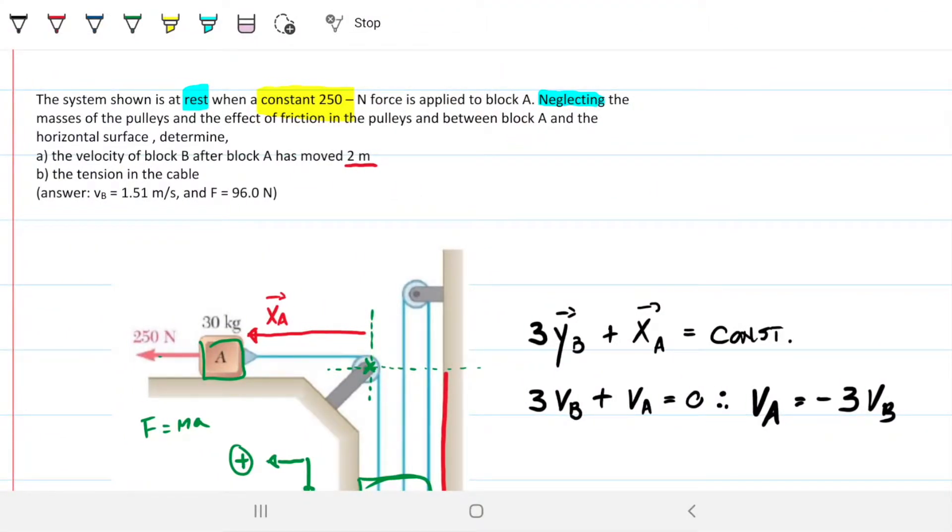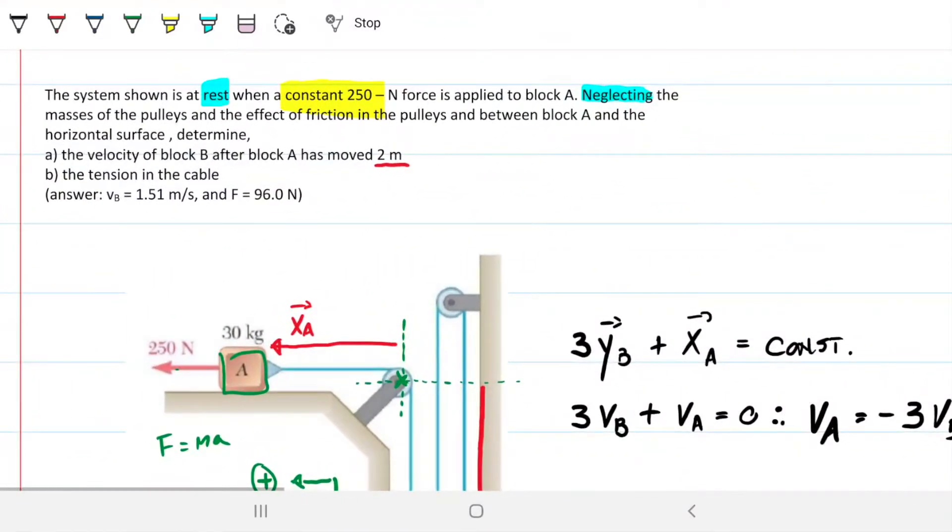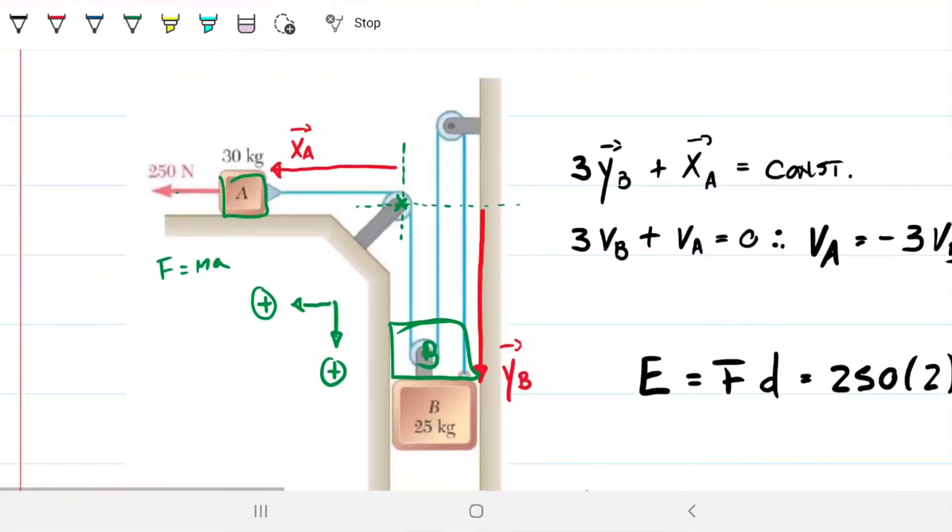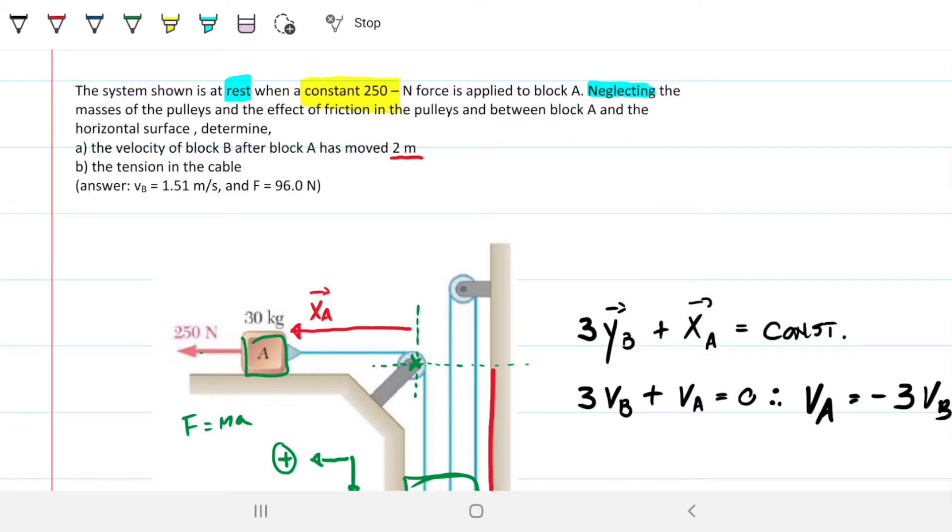So in this case here, it's exactly the same thing. I'm actually using the same page to show you. We're going to solve the same problem. The problem is the pulley system that we have already solved for different situations. Problem statement reads, the system shown is at rest when a constant 250 Newton force is applied to block A. Neglecting the masses of the pulleys and the effect of friction in the pulleys and between block A and the horizontal surface, determine the velocity of block B after block A has moved two meters and the tension in the cable. So obviously, answers have to be exactly the same. Our method, however, is going to change slightly.